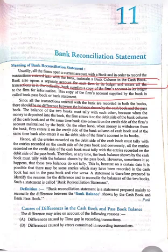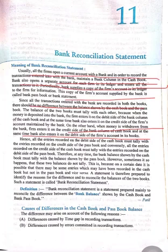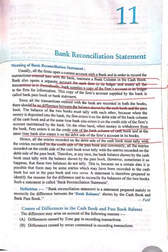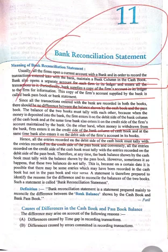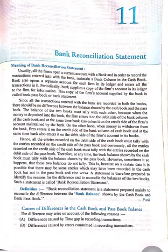When money is withdrawn from the bank, the firm enters it on the credit side of the bank column, and at the same time the bank debits the firm's account. Hence, all entries recorded on the debit side of the cash book must tally with the entries recorded on the credit side of the pass book. But as already stated, due to some cases these balances will not tally, and we have to prepare Bank Reconciliation Statement.